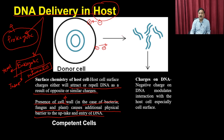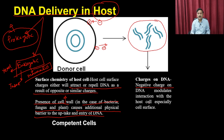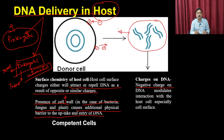The host cell membrane could be positively charged or negatively charged. If it is positively charged, it will attract the DNA because DNA is negatively charged. If the host cell membrane is negatively charged, it will repel the DNA. The presence of a cell wall — as in prokaryotic hosts such as bacteria, fungi, and plants — creates an additional physical barrier to the uptake and entry of DNA.